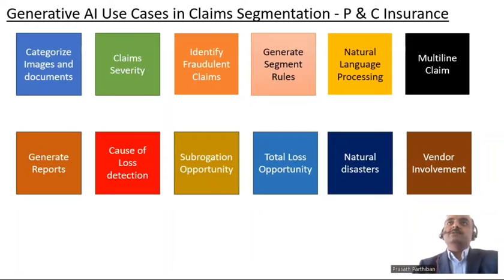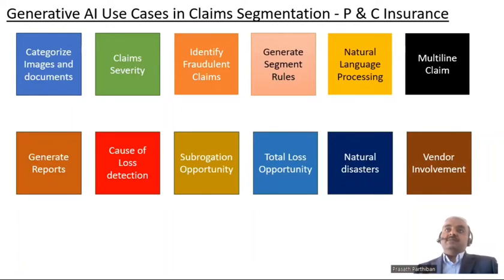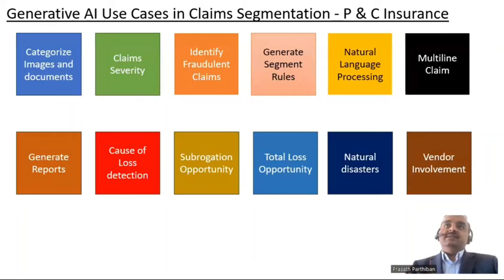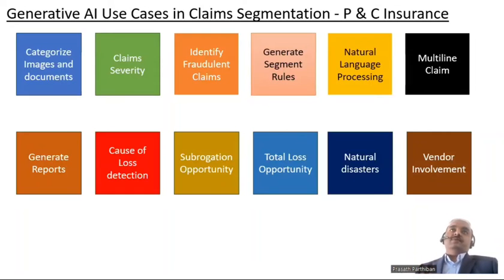Multi-line claims — in commercial lines you could have a claim where there is a loss for both Workers' Comp and General Liability, two lines of business. When that happens, it is very important to assign those claims to the right adjuster, because it is not just one line of business. AI can easily do that based on its ability to read the data and generate content.